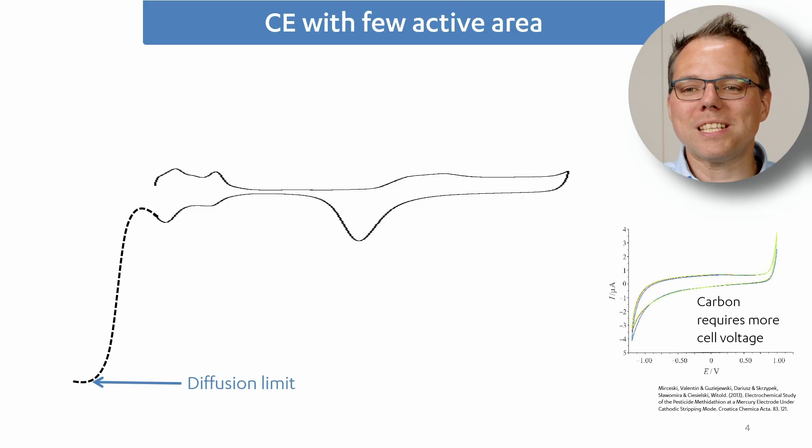It can even be worse depending on what electrode material you choose. So you should be careful when you choose, for example, carbon as a counter electrode, because it requires an even higher cell voltage because platinum actually is a good catalyst for water splitting.